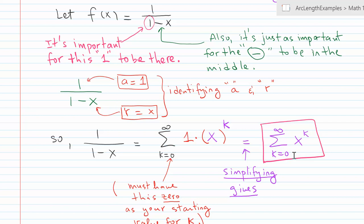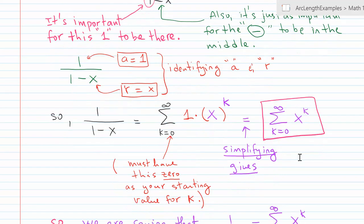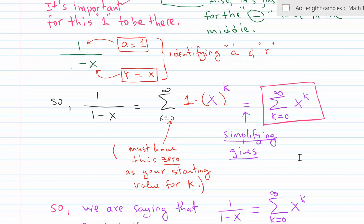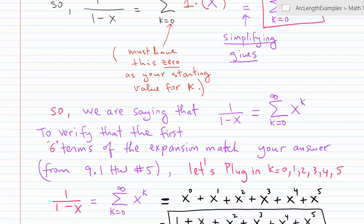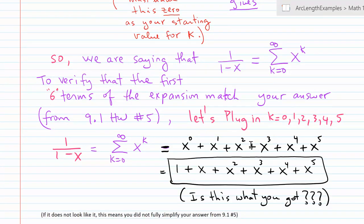Now we're going to verify that this actually, when you expand it, will give you - I'm going to expand it to the first six terms, which will give me a fifth degree polynomial expansion. So if I go ahead and expand it to the first six terms, so when k is zero, x to the zero is one; when k is one, and so on and so forth, you get these six terms, which basically simplifies to this sum - everything is positive in this case. So is this what you got in the homework 9.1, number five, when you did all those derivatives?